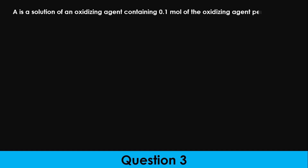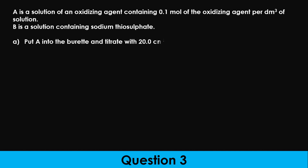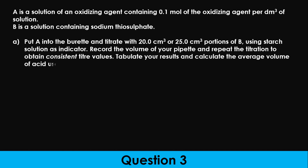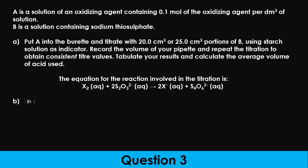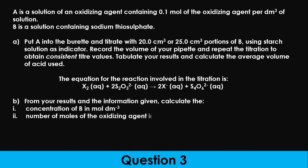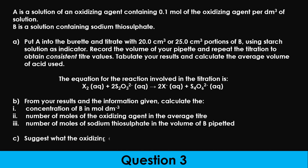Question 3. A is a solution of an oxidizing agent containing 0.1 mole of the oxidizing agent per dm³. B is a solution containing sodium thiosulfate. Put A into the burette and titrate with 20 or 25 cm³ portions of B using starch solution as indicator. Record the volume of your pipette and repeat the titration to obtain consistent titer values. Tabulate your results and calculate the average volume of A used. The equation of reaction is as shown on the screen. From your results, calculate: the concentration of B in moles per dm³, the number of moles of the oxidizing agent in the average titer, and the number of moles of sodium thiosulfate in the volume of B pipetted. Suggest what the oxidizing agent could be, giving reasons.